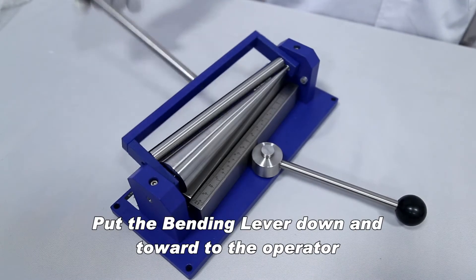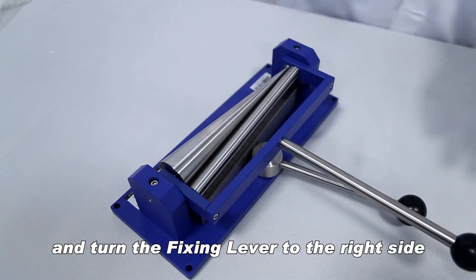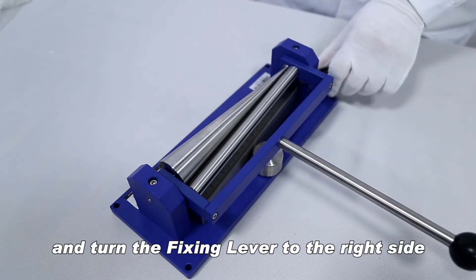Put the bending lever down and towards the operator, and turn the fixing lever to the right side.